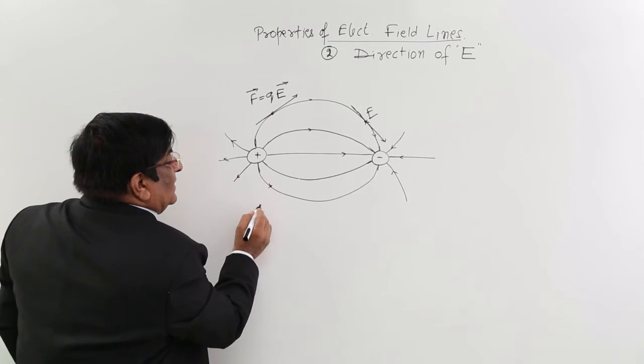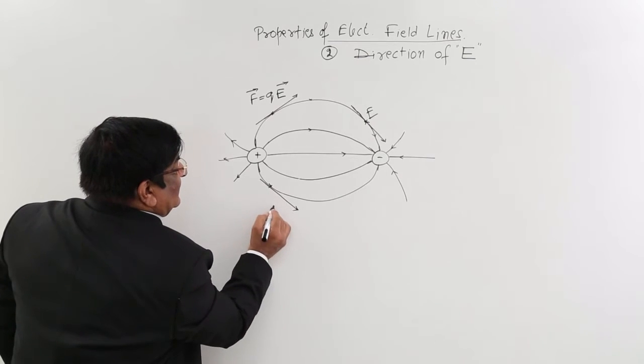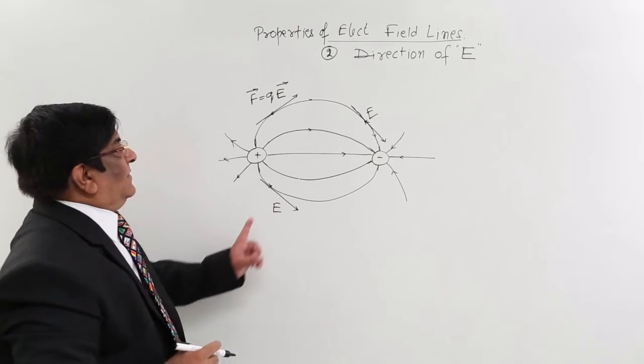So if now I ask you, what is the direction at this point? You know, you have to draw a tangent over here and this tangent represents the direction of electric field.